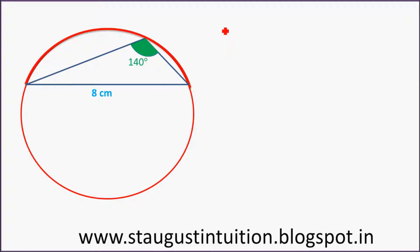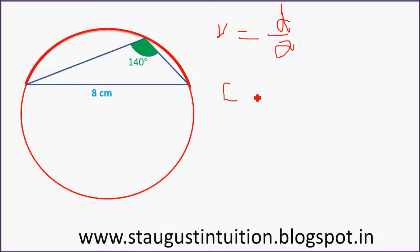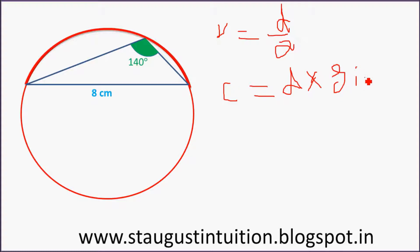The radius is equal to diameter divided by 2. And we know that chord is equal to diameter. That chord will be sine.